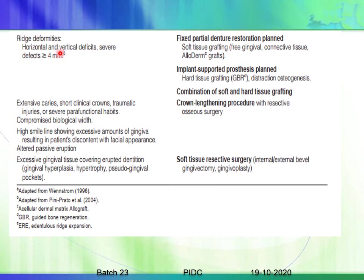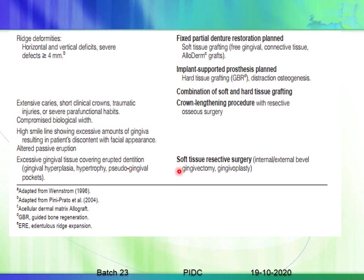For ridge deformities with horizontal and vertical defects greater than 4 mm, options include an FPD with soft tissue grafting or implant-supported prostheses with hard tissue grafting via guided bone regeneration, distraction osteogenesis, or a combination of soft and hard tissue grafting. For extensive caries, short clinical crowns, traumatic injuries, or severe parafunctional habits with a compromised biologic width, crown lengthening with osseous surgery is planned. Excessive gingival tissue covering the erupted dentition — including gingival hyperplasia, hypertrophy, or pseudo-gingival pockets — is treated with soft tissue resective surgery such as gingivectomy or gingivoplasty.